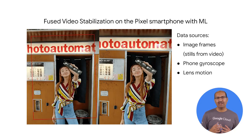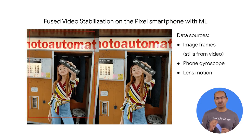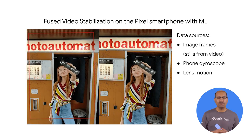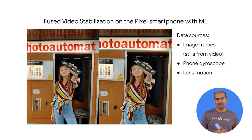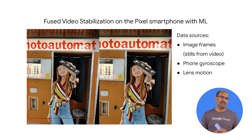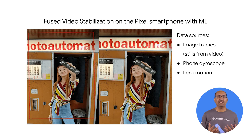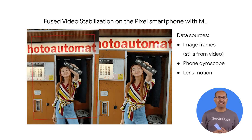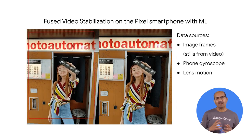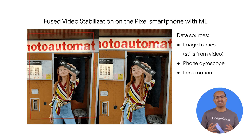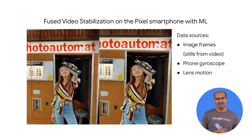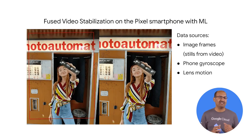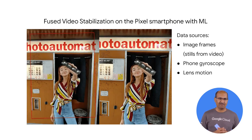Let's start with an example illustrating how Google uses its own compute power. Google Photos has recently been introducing smart features like this one for automatic video stabilization, for when the camera is shaky, as you see here on the left.